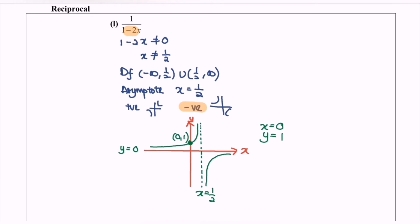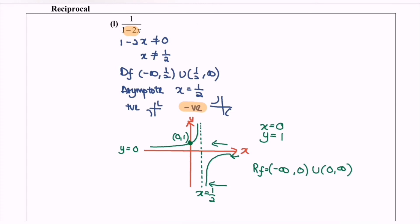Next, we have to identify the range. Based on the diagram, the range goes from negative infinity until 0, where 0 is not included, union from 0 until positive infinity, where 0 is not included. So here we are, and thanks for watching.